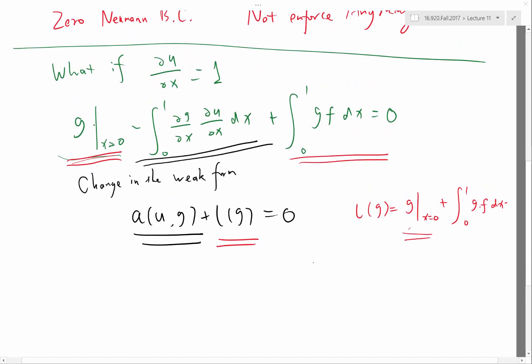So, remember our right-hand side B is equal to L of H1, L of H0, L of H1, etc. So